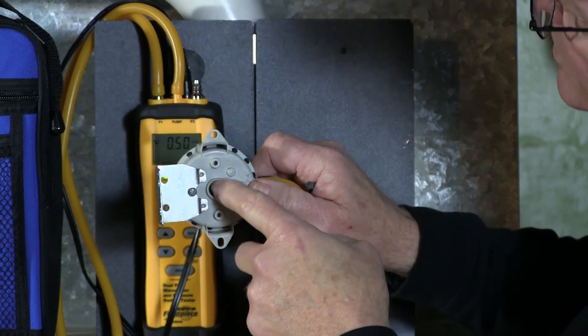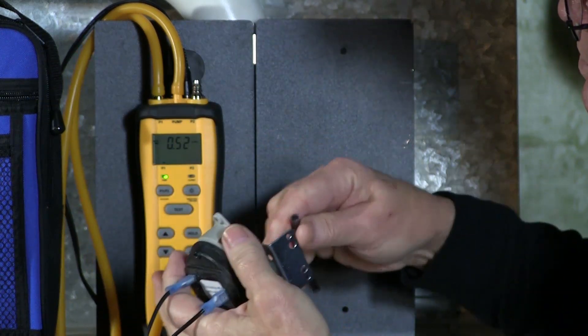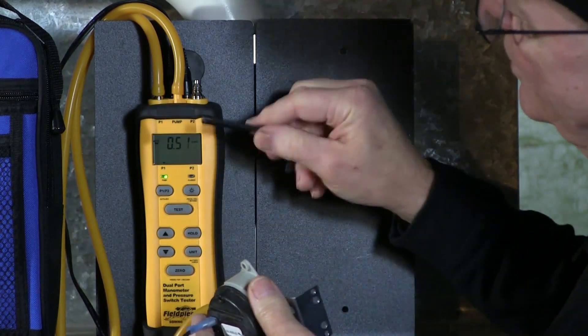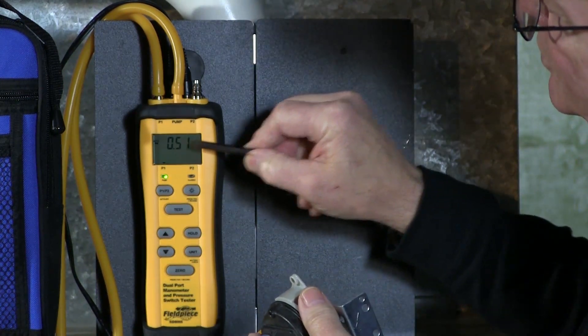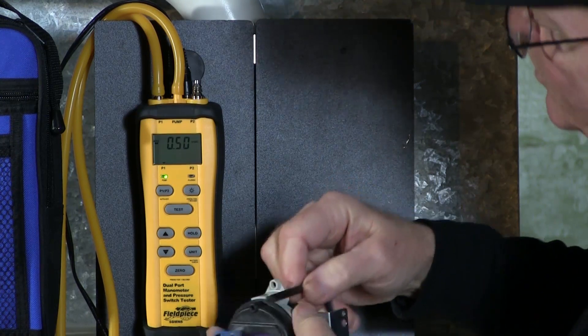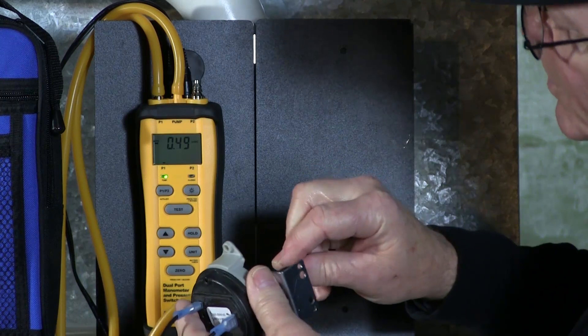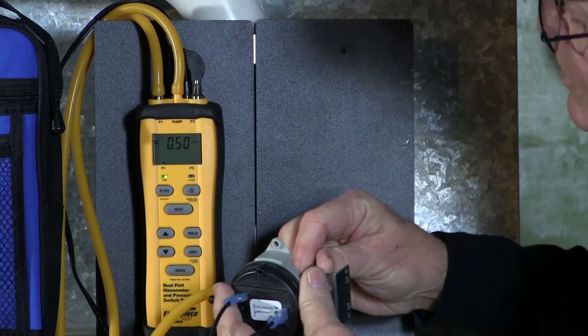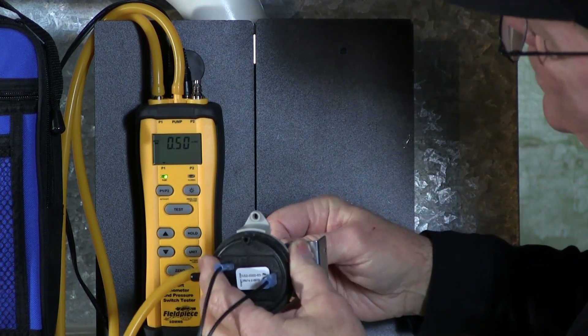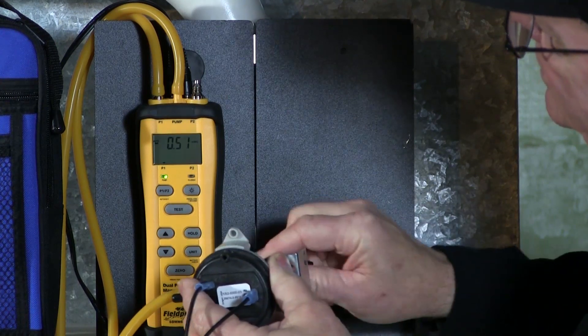I'm going to screw the adjustment screw in. Now, when I do make the adjustments to the adjustment screw, you're going to see the pressures fluctuate a little bit. That's because I'm pushing the diaphragm back and forth when I'm screwing this in, compressing it. So I'm going to go ahead and screw the adjustment screw in at this point until the red LED comes on.